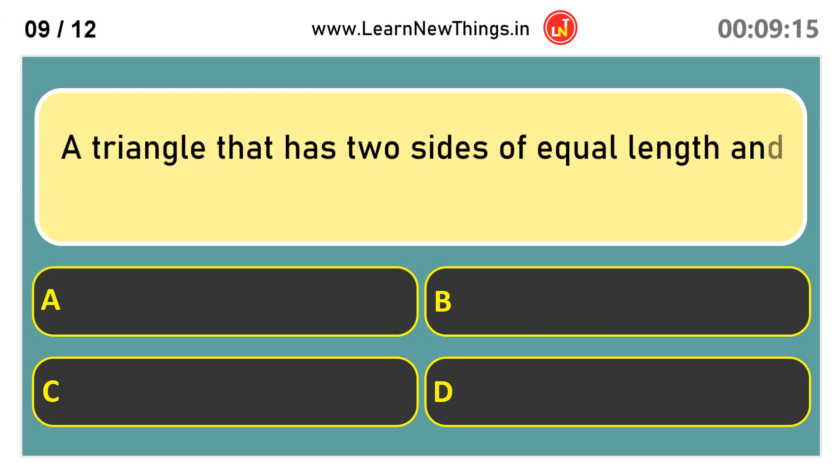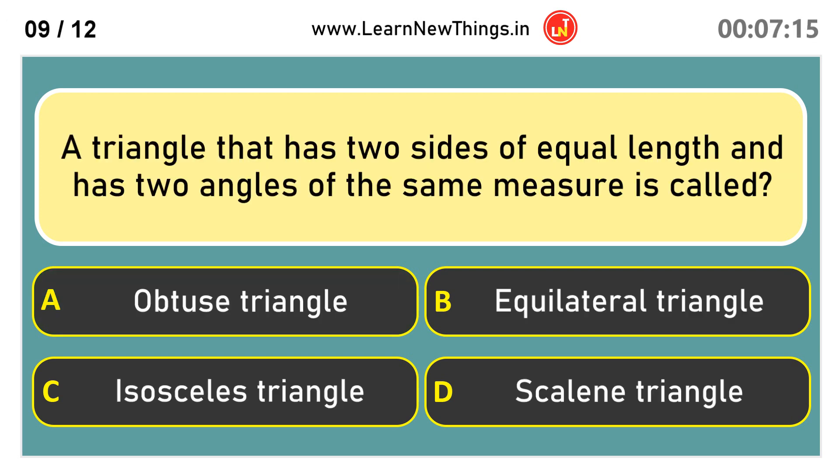A triangle that has two sides of equal length and has two angles of the same measure is called isosceles triangle.